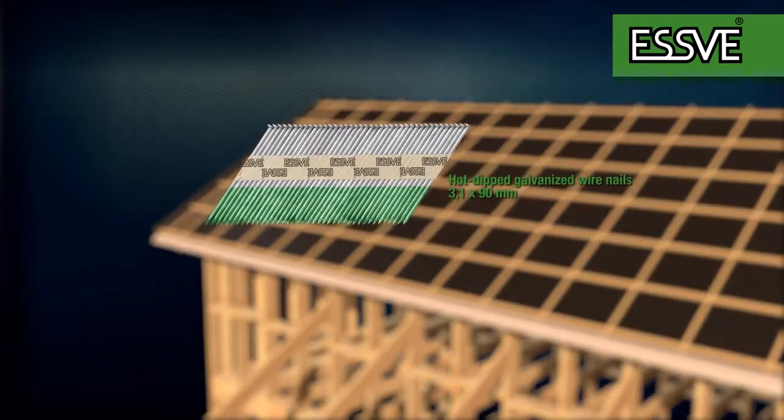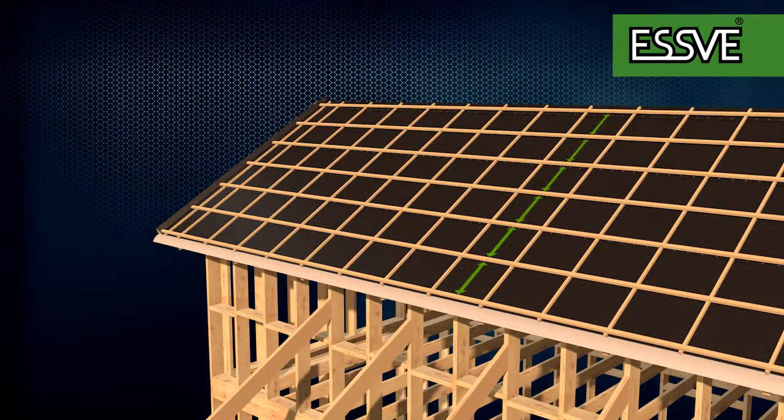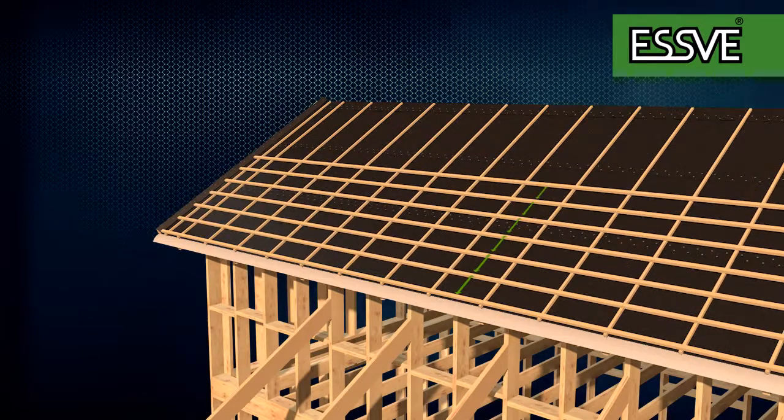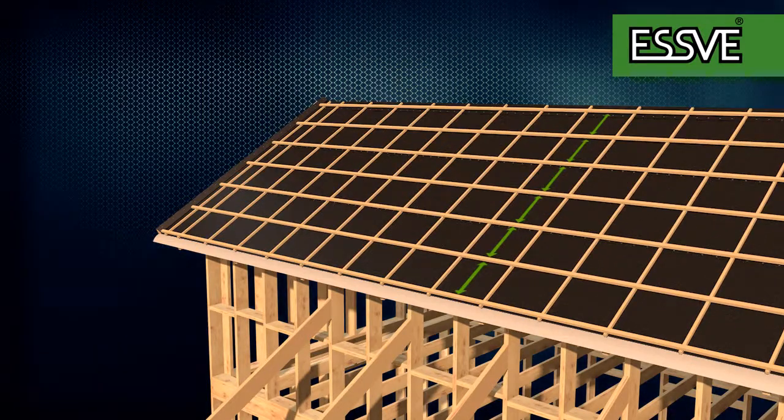Fasten the counter battens using hot-dipped galvanized wire nails. The spacing between the support battens depends on the roofing tiles or the roofing sheets you intend to use and is therefore stated by your dealer.